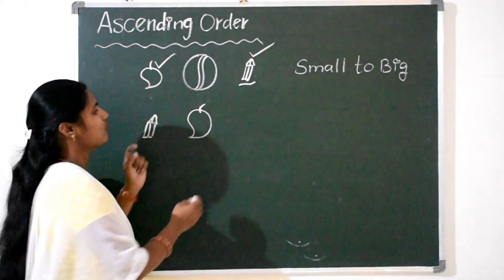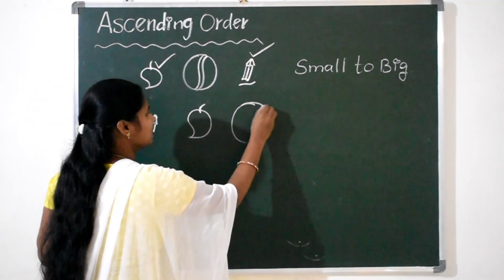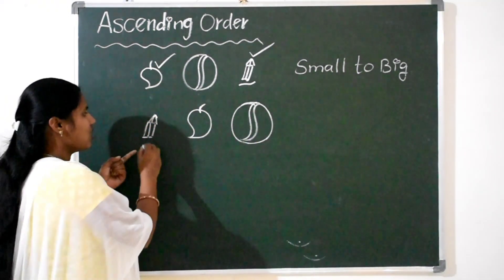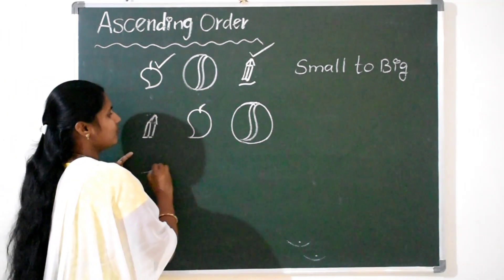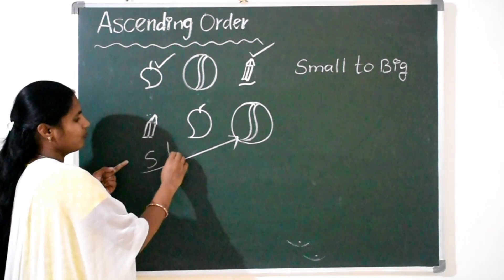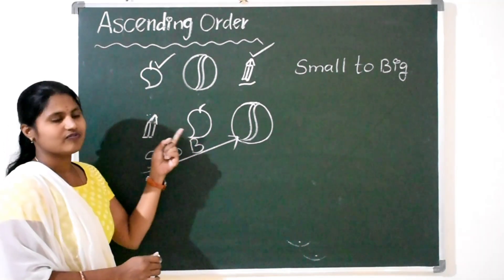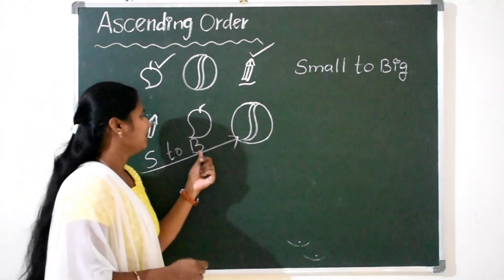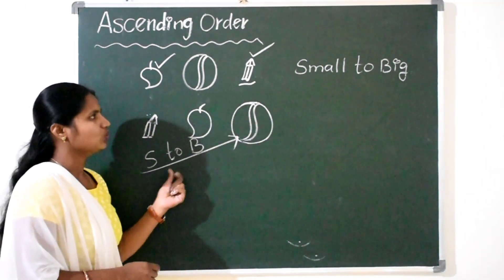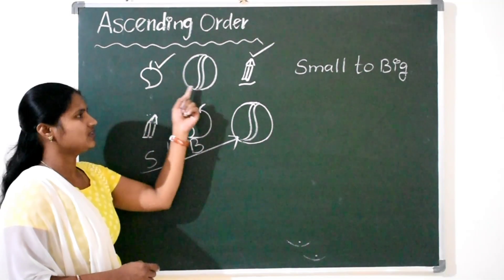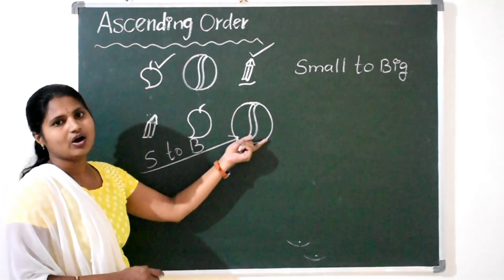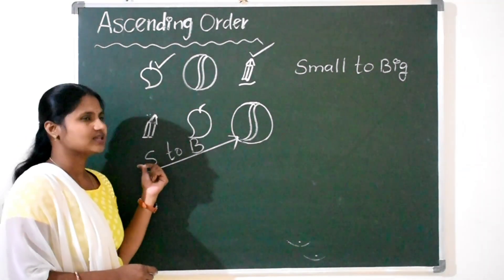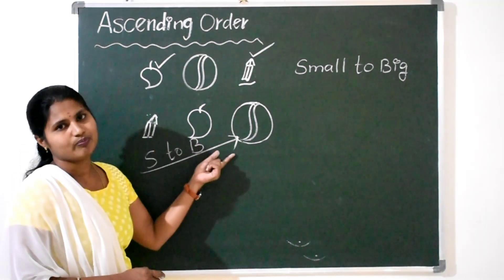Next, Ball. Ball is big, so ball comes last. Small to big. We have arranged these things from small to big. S means Small, B means Big. We have arranged these things in ascending order. Ascending order is nothing but we have to arrange the things or numbers from smallest to biggest.